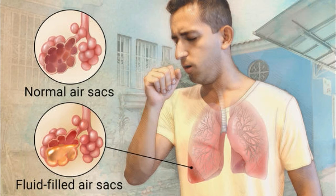WHO Response: The WHO and UNICEF Integrated Global Action Plan for Pneumonia and Diarrhea aims to accelerate pneumonia control with a combination of interventions to protect, prevent, and treat pneumonia in children. Actions include protecting children from pneumonia by promoting exclusive breastfeeding and adequate complementary feeding, and preventing pneumonia with vaccinations, hand washing with soap, and reducing household air pollution.